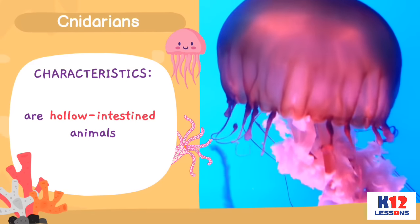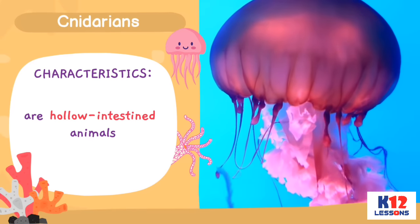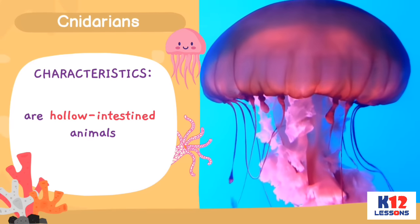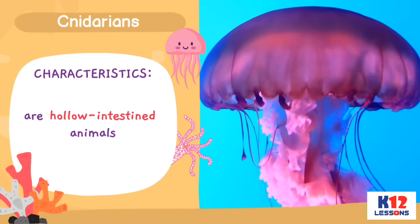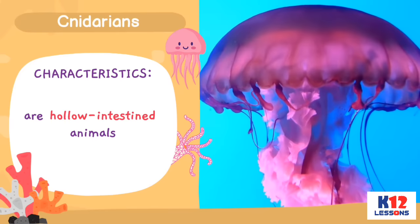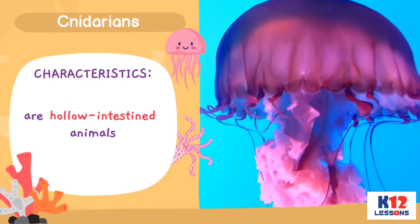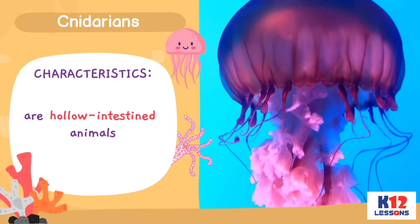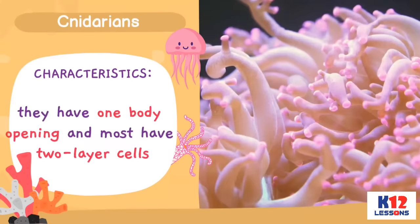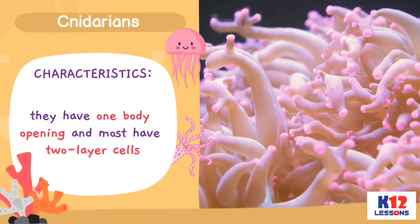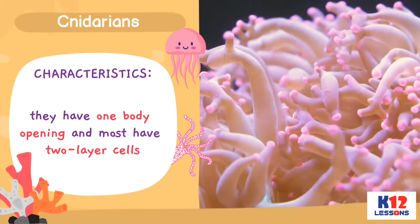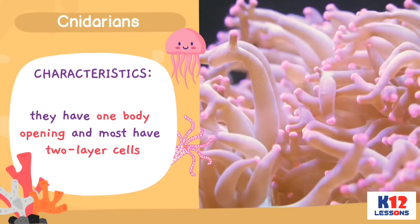Cnidarians: Cnidarians are hollow-intestined animals. They have one body opening and most have two-layer cells.